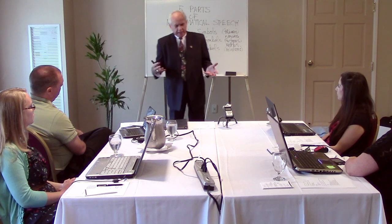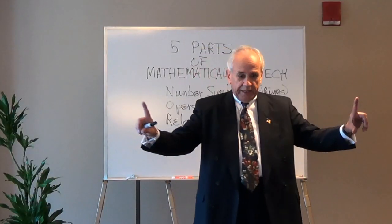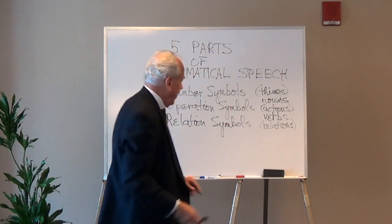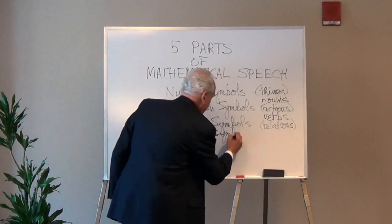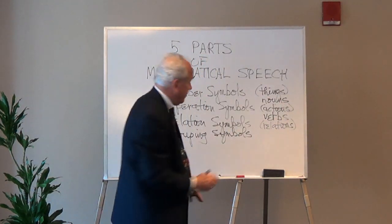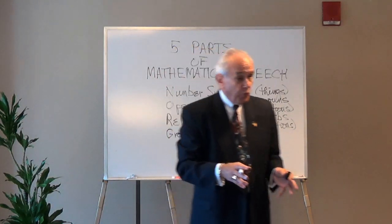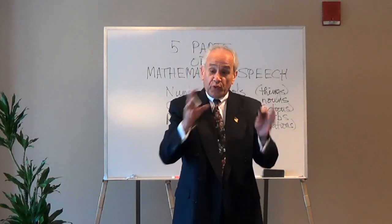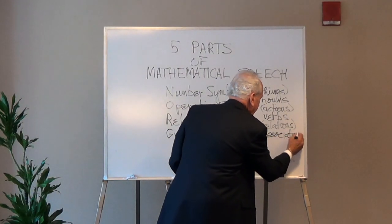So now you have numbers, operations, and relations — you can say three plus four is equal to seven. What other kind of math symbol do we use at the elementary level that doesn't fit into one of those categories? What do you see in arithmetic problems that impacts how you work with them? Parentheses — grouping symbols. We've been using parentheses, but we're also talking about brackets and braces, and at the elementary level, things like drawing a circle around. These are grouping symbols, showing the associations of mathematics.